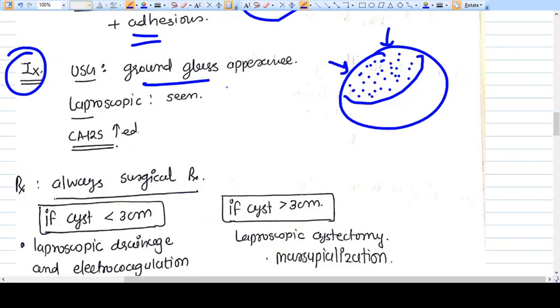The gold standard method is diagnostic laparoscopy, in which we can see directly that this is the chocolate cyst.